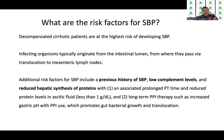Decompensated cirrhotic patients are at the highest risk of developing SBP. Infective organisms typically originate from the intestinal lumen via bacterial translocation, eventually reaching the mesenteric lymph nodes from where they spread further. Additional risk factors include a previous history of SBP, low complement levels, reduced synthesis of proteins with prolonged PT, reduced ascitic fluid protein less than 1 g/dL, and long-term PPI therapy, which increases gastric pH and promotes gut bacterial growth and translocation.